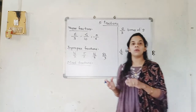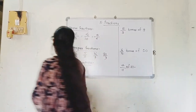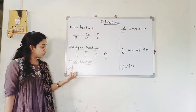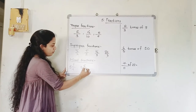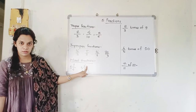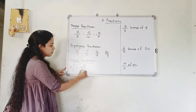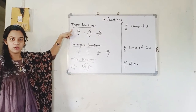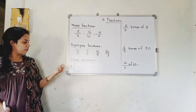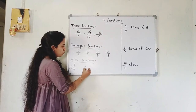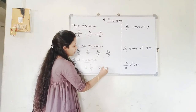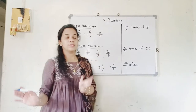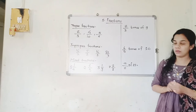Mixed fractions are those that come as a combination of an integer and a proper fraction. For example, 5 and 1 upon 4 — written as an integer 5 combined with the proper fraction 1 upon 4. Note that 5 and 6 upon 5 is not valid because 6 upon 5 is an improper fraction; the fractional part must be a proper fraction. Examples of mixed fractions: 2 and 4 upon 5, 3 and 1 upon 9, 7 and 2 upon 8.